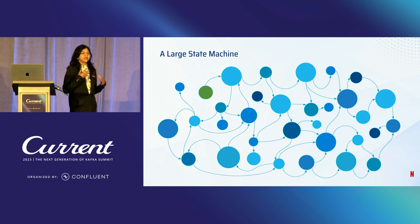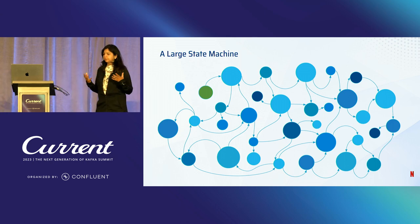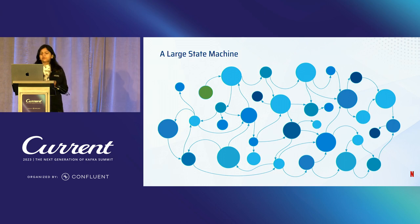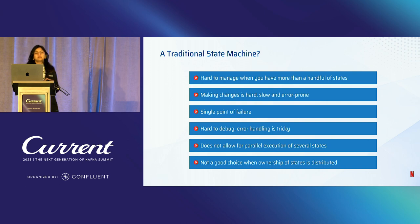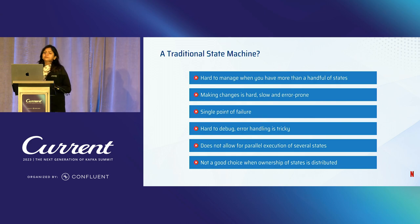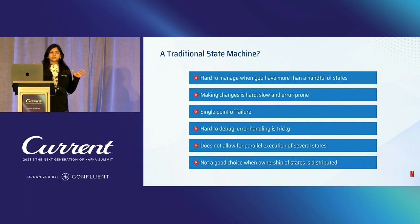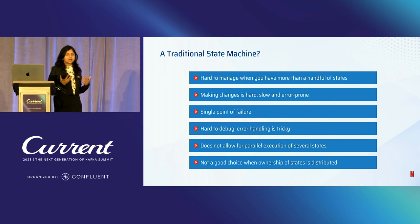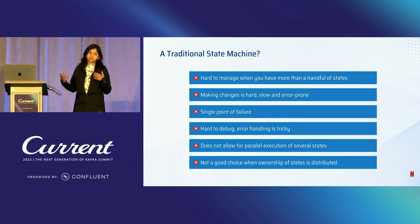We can implement task management using different technical approaches. One could be traditional state machines, but finite state machines are based on a predetermined set of rules. They often struggle to dynamically change with changing states and conditions, proving inflexible. A single error can halt all transitions, making debugging complex and time-consuming. Another problem is that state machines often work with synchronous processing, but in our use cases we sometimes have to process asynchronously.